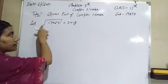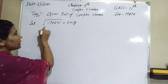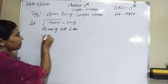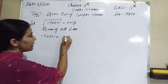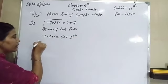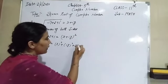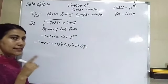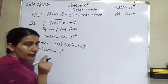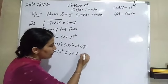To find x and y, we square both sides to remove the square root. So minus 7 plus 24i equals x plus iy, whole squared. Using the identity (a+b)² = a² + b² + 2ab, where a is x and b is iy: the right side becomes x² plus (iy)² plus 2ixy, which gives x² minus y² plus 2ixy, since i² equals minus 1.